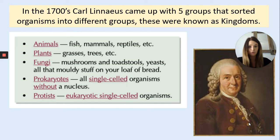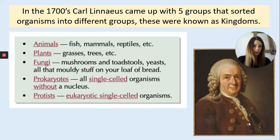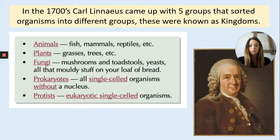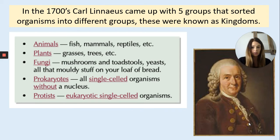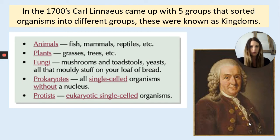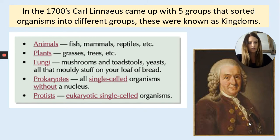In the 1700s, a scientist called Carl Linnaeus came up with five groups to sort organisms into — he called them kingdoms. His five kingdoms were: animal, plant, fungi, prokaryote, and protist. There's a small explanation of what each one is on screen. He said that things will fall under one of these five categories.